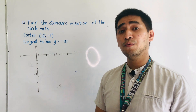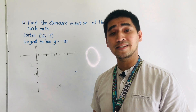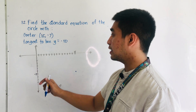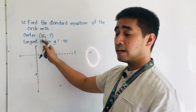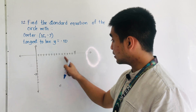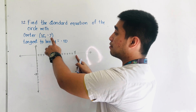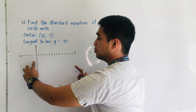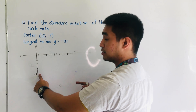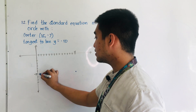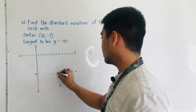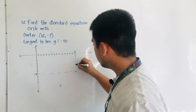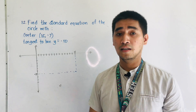If you are given this one, all we have to do is to plot first the center. We are given the center located at positive 15 and negative 7. The x value is positive 15, and the y value is equal to negative 7. So the intersection of x = 15 and y = -7 is our center. So this is our center — this is the center of the circle.